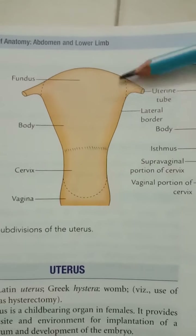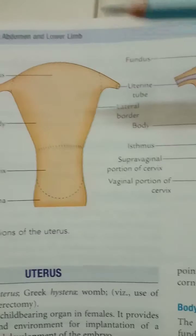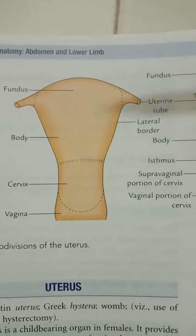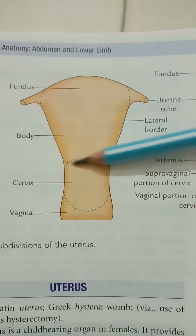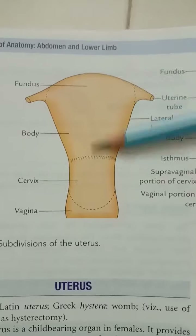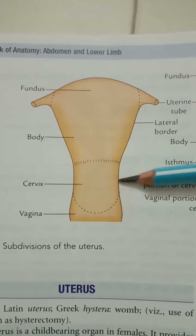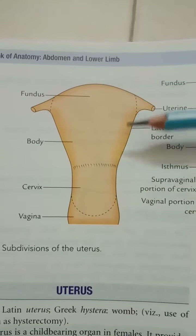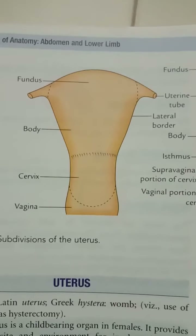The uterus is pyriform in shape. Its measurements are three inches in length, two inches in breadth, and one inch in thickness. The weight of the uterus is approximately 30 to 40 grams. It is divisible into the upper expanded part called the body, which is the upper two-thirds, and the lower cylindrical part called the cervix, forming the lower one-third. Normally, the long axis of the uterus forms an angle of about 90 degrees with the long axis of the vagina.